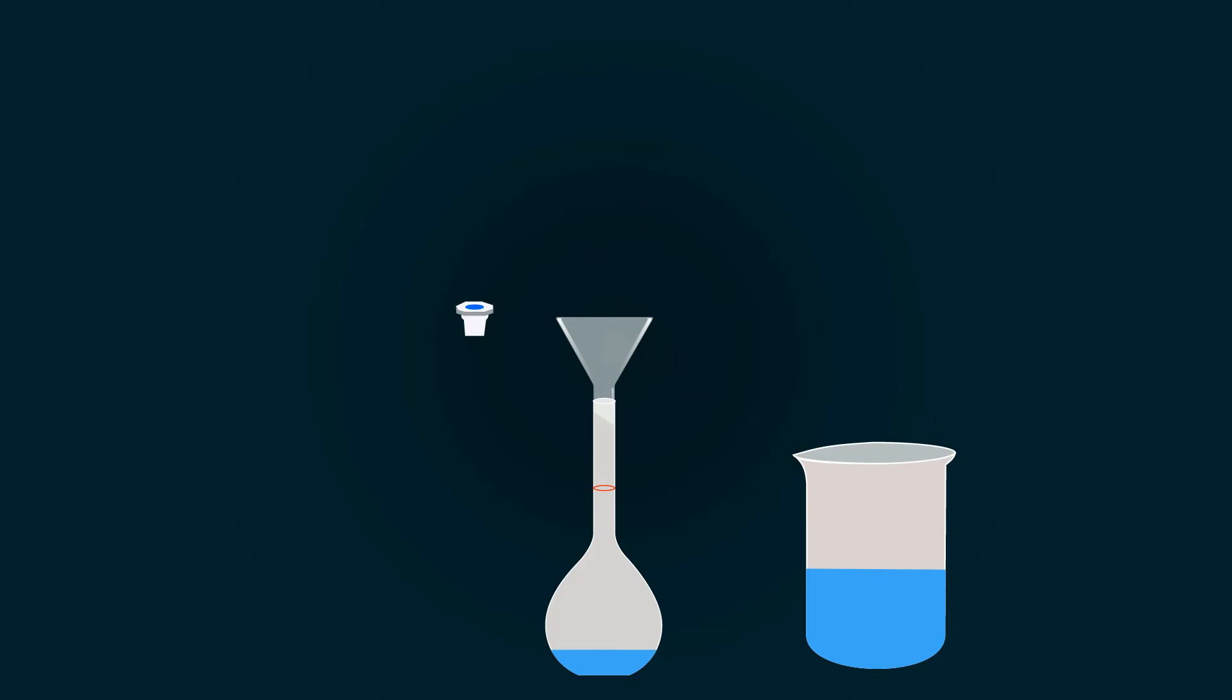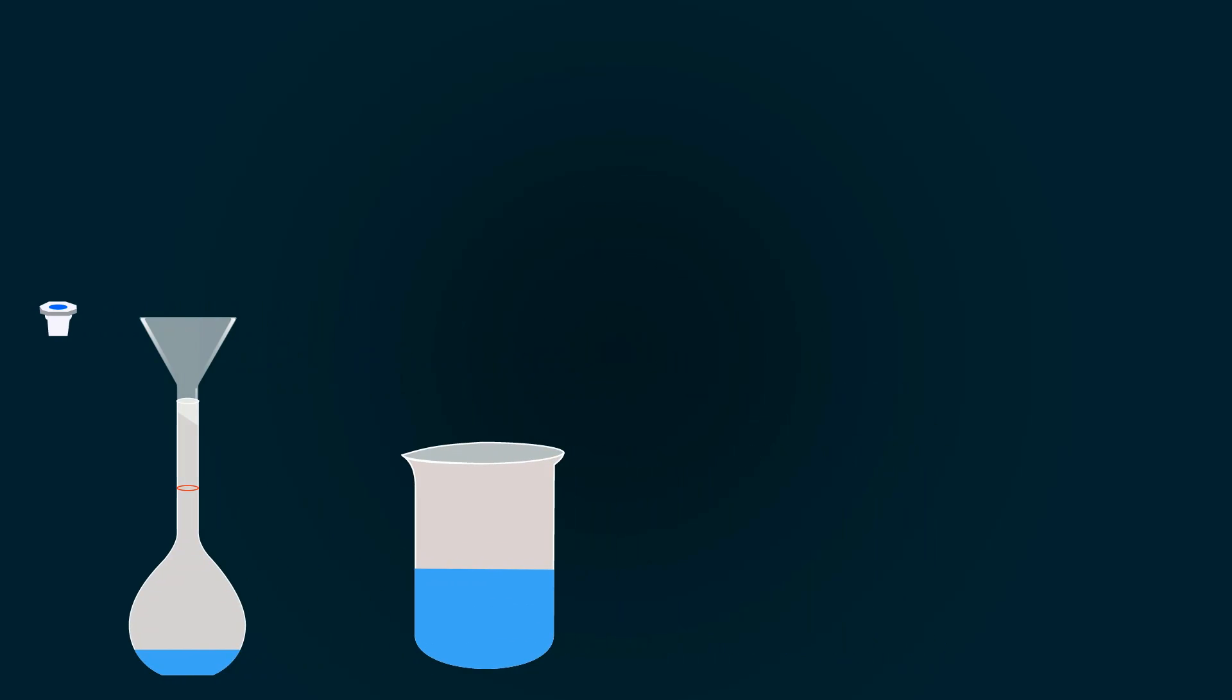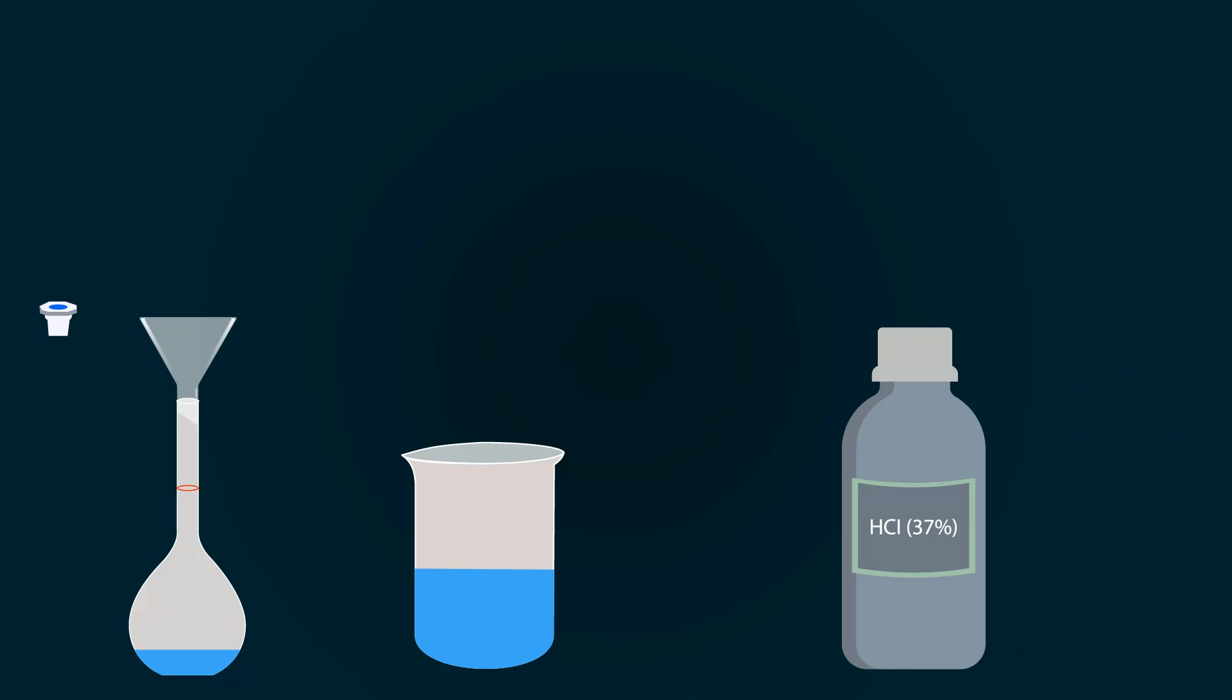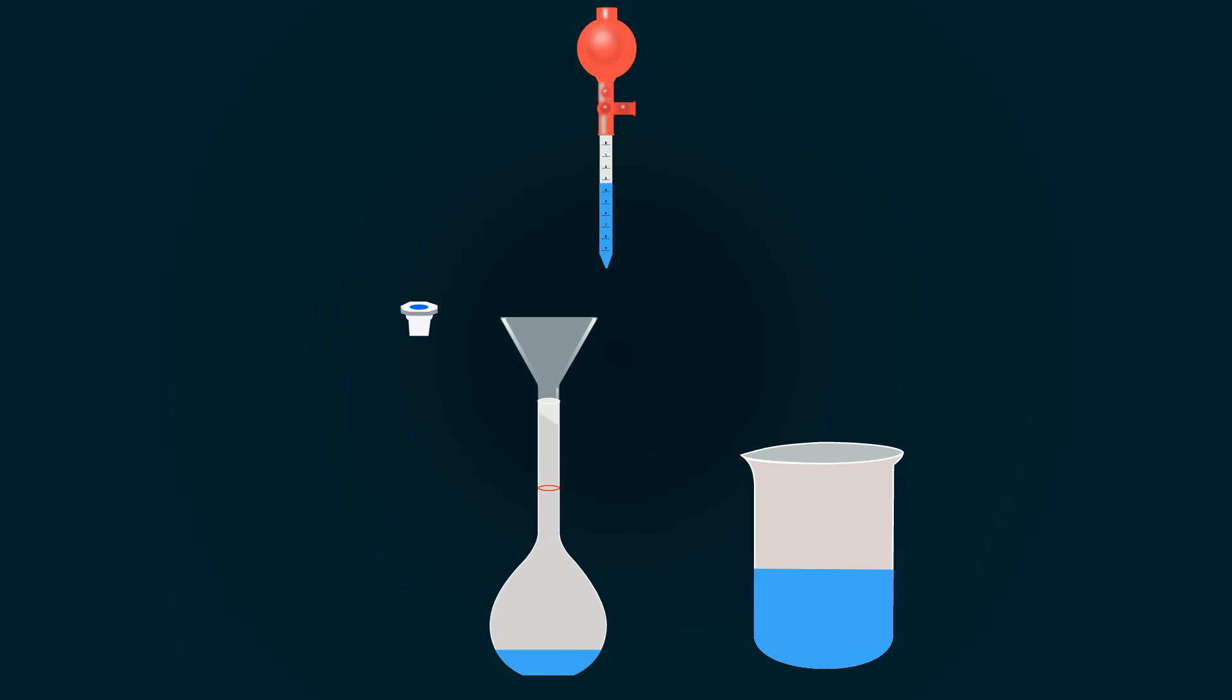Now take the bottle of 37% HCl, pipette out our required volume which is 67.57ml, and pour this into the measuring flask.